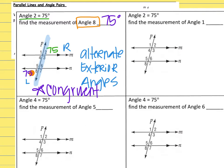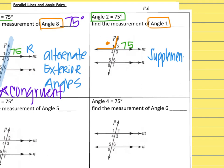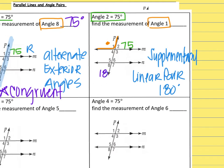Looking at the next question: if angle two is 75 degrees again, find the measurement of angle one. Angle two is 75, and angle one is right next to it. These are supplementary, or this could be called a linear pair because they make a straight line together — they need to make 180 degrees as a total. So to find that measurement, I would do 180 minus 75, and that would be 105.